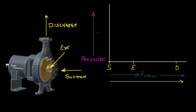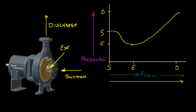On the vertical axis of the graph, I'll chart the corresponding pressure of the fluid at different locations in the pumping cycle. Let's say that the suction pressure is at this location, and the pressure at the eye of the impeller is at this location, lower than the suction pressure, and the discharge pressure is here. So by connecting the dots, the typical pump curve looks something like this.